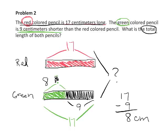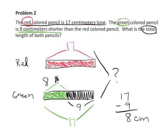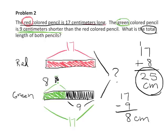So what is the total length? Well, we have the red one up here is 17, and we have the green one here, which is 8. So we're going to add 17 plus 8. That's 15, carry the 1. So that's 25. So our total length is 25 centimeters.